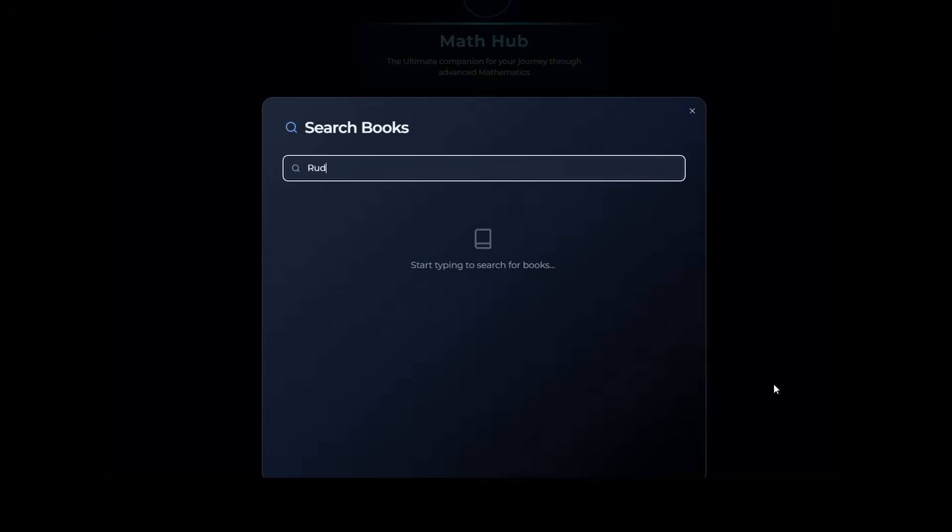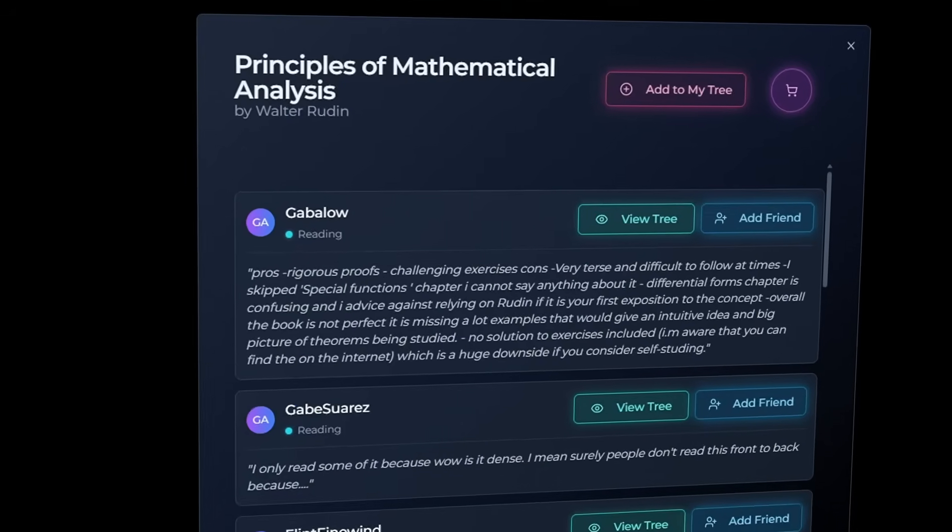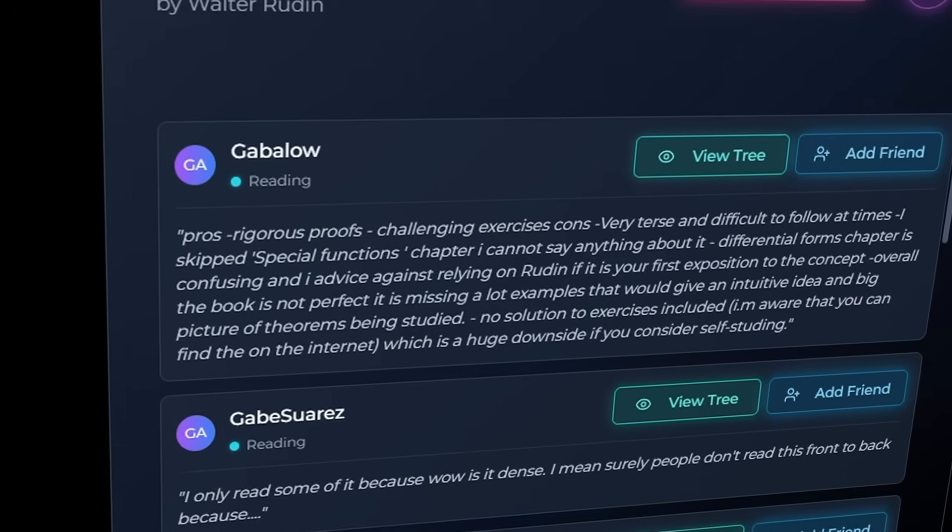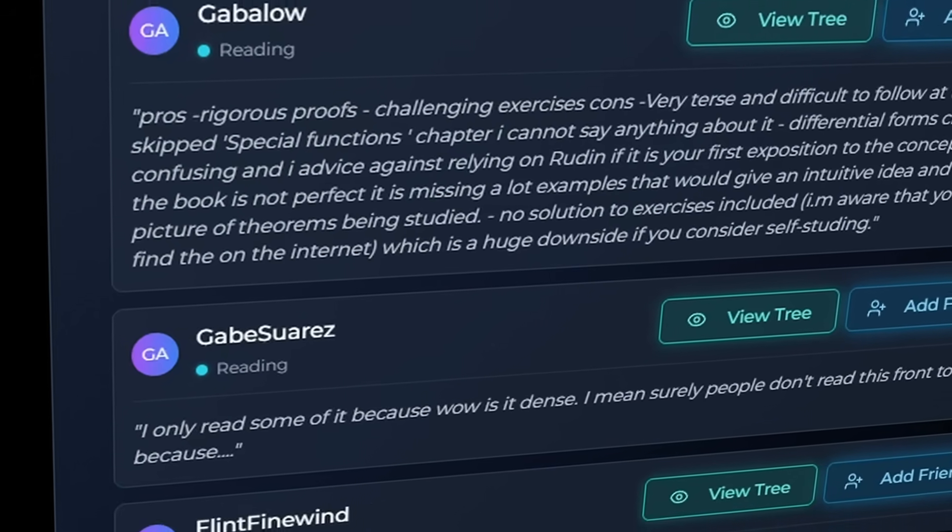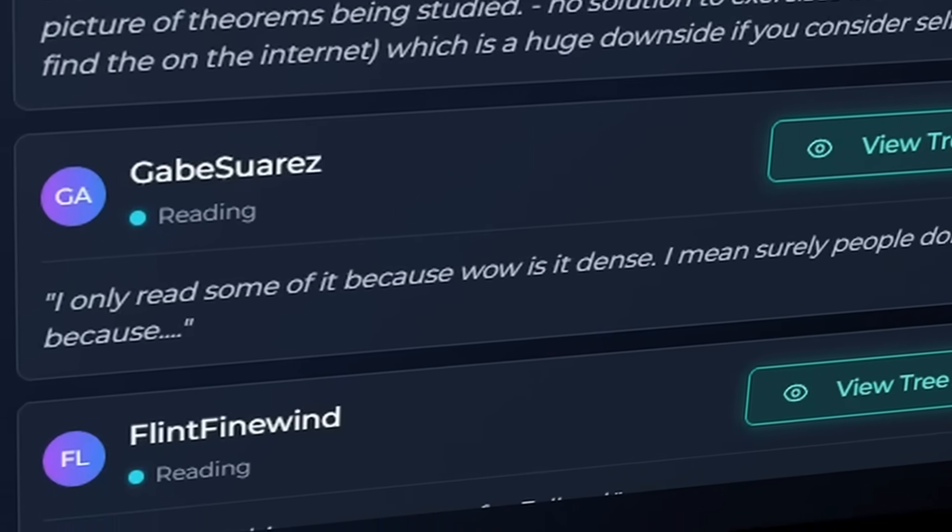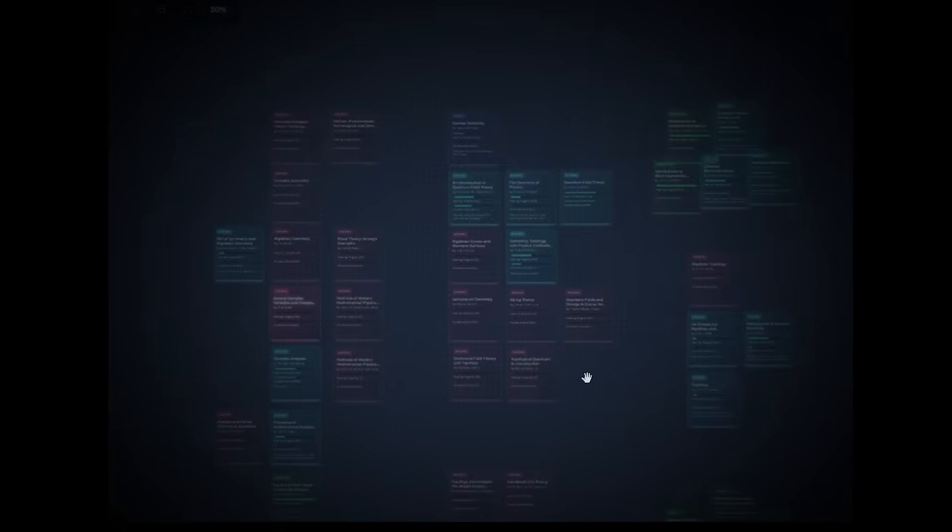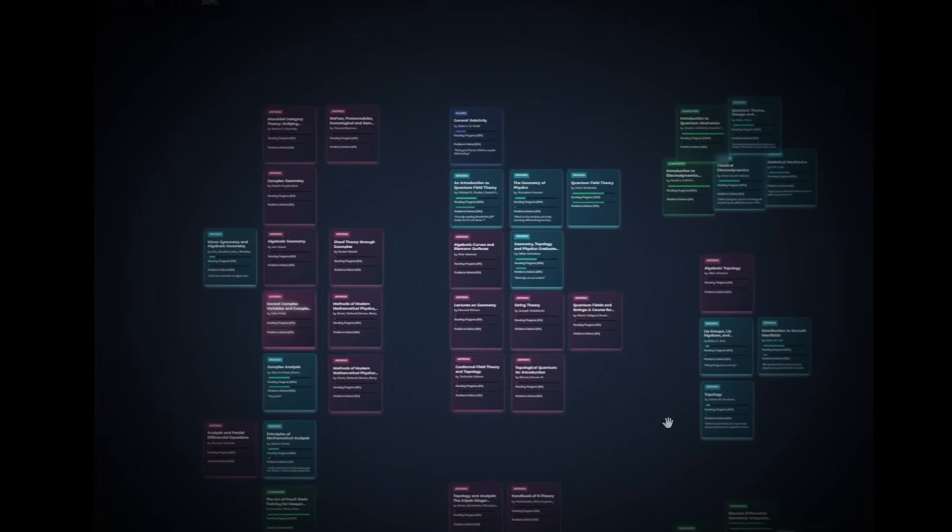Well, this is one of the best things about having a community like mathhub.org. I've gone through over a thousand users' reading journeys and found the books that appear in people's journeys the most often, and then I've read through the reviews to find out which ones are famous for the right reasons. Oh, and by the way, this is not a small sample size. A thousand user journeys means that this is as unbiased as you'll get from a YouTube channel talking about math books.